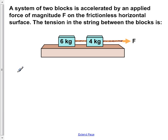A system of two blocks is accelerated by an applied force of magnitude F on the frictionless horizontal surface shown below. The tension in the string between the blocks is... So the first step for solving this is to draw the free body diagrams for each of the blocks.